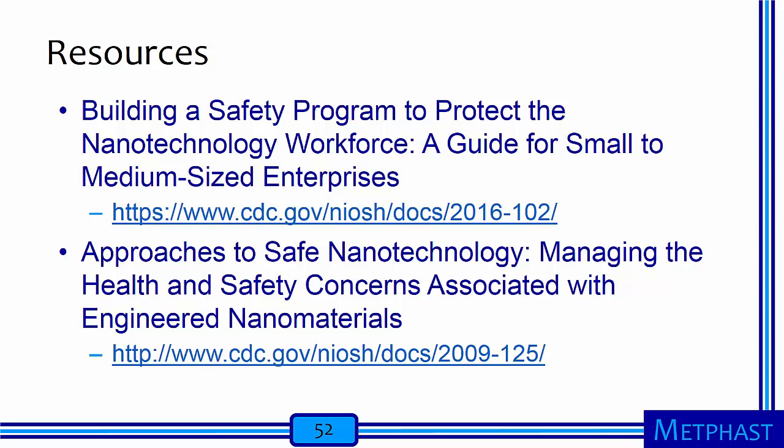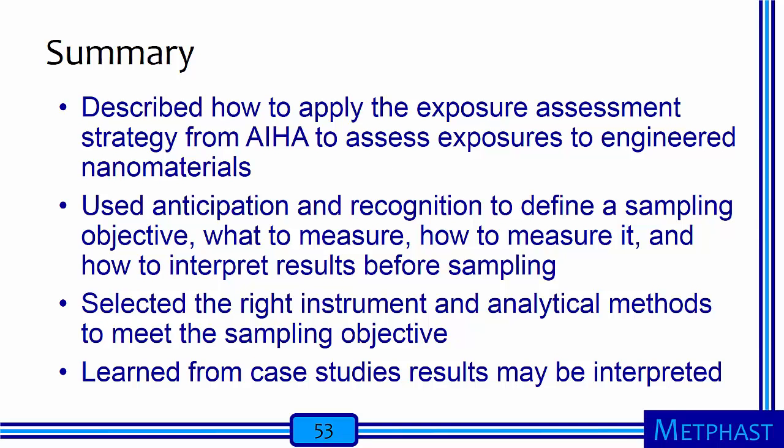Here are specific resources useful for conducting nanomaterial exposure assessments, including: Building a Safety Program to Protect the Nanotechnology Workforce: A Guide for Small to Medium-Sized Enterprises, and Approaches to Safe Nanotechnology: Managing Health and Safety Concerns Associated with Engineered Nanomaterials. In this module, we described how to apply the exposure assessment strategy from AIHA to assess exposures to engineered nanomaterials. We used anticipation and recognition to define a sampling objective — what to measure, how to measure it, and how to interpret results before sampling. We selected the right instruments and analytical methods to meet the sampling objective, and learned from case studies how to interpret results.